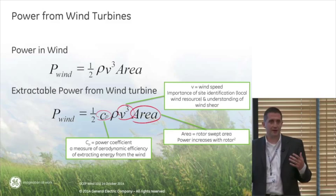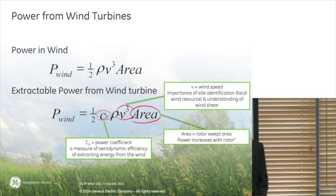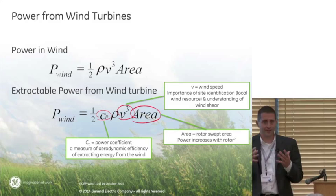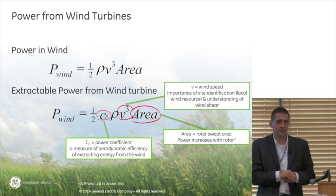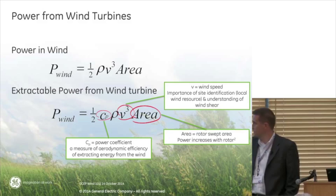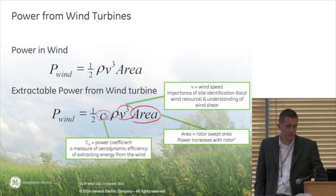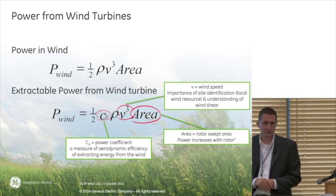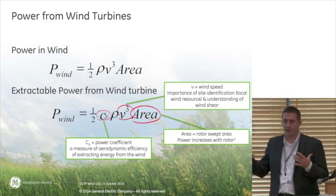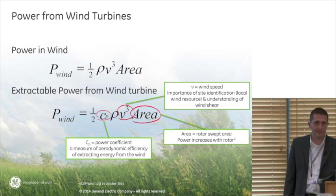We put in another piece called CP, the power coefficient, which is the aerodynamic efficiency — how much can you aerodynamically extract from the wind. There's a theoretical limit for CP that we'll get into. Skipping over density, since I can't do much about that as a designer, the two most important variables are wind speed — so siting becomes really important — and how big I make the rotor. Those are the really big things at a high level: aerodynamic efficiency, where you site, and how big a rotor you have.